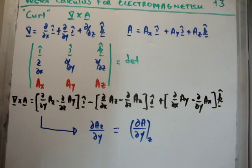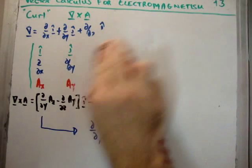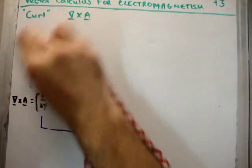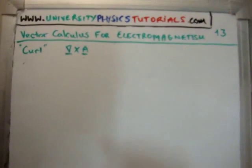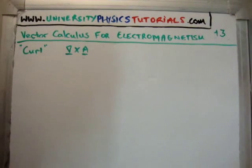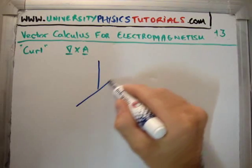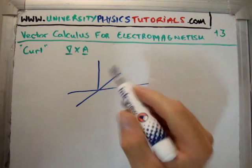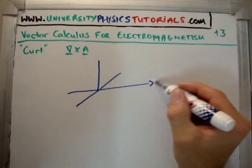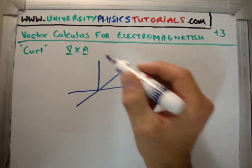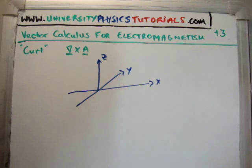So the curl of a vector field is pretty straightforward to calculate, but it is not just in the calculations that we are interested in it, similar to the divergence. We are interested in it for its geometric properties. You can imagine it is given its name for a particular reason, and the reason is because it measures the tendency of your vector field to curl around something.